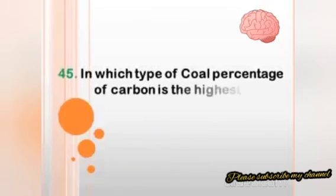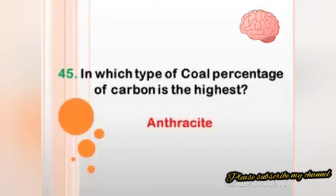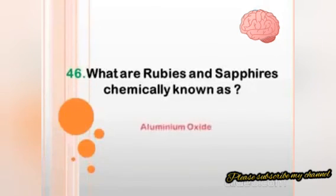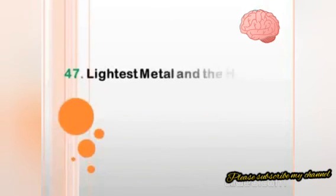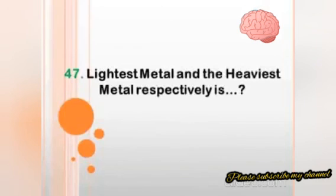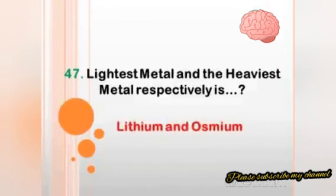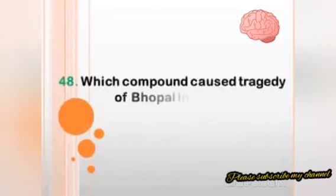In which type of coal is the percentage of carbon the highest? Answer: anthracite. What are rubies and sapphires chemically known as? Answer: aluminium oxide. What are the lightest metal and the heaviest metal respectively? Answer: lithium and osmium.